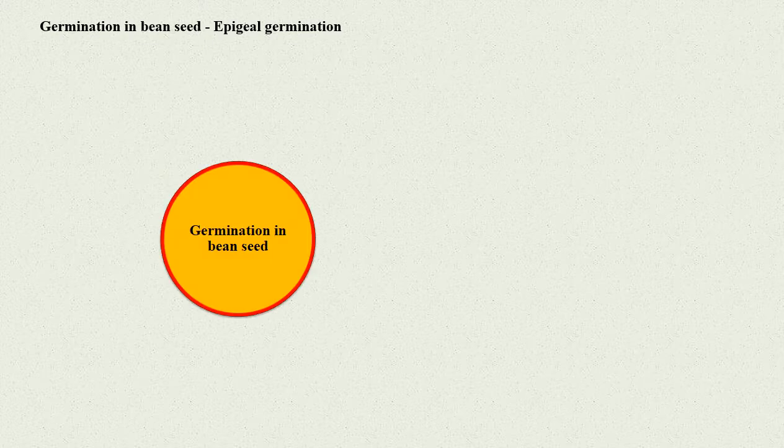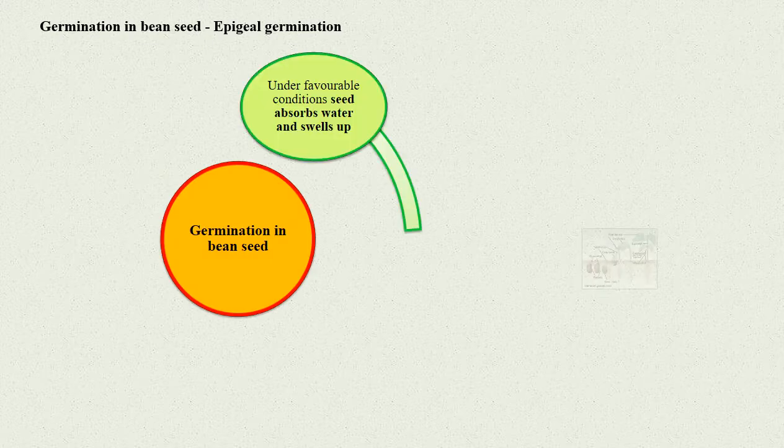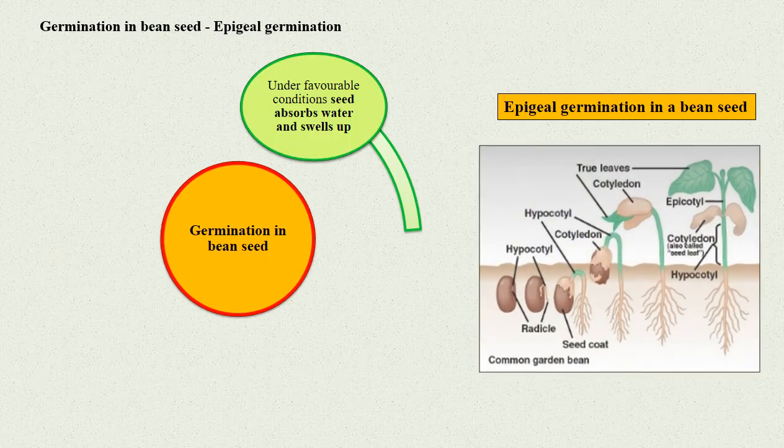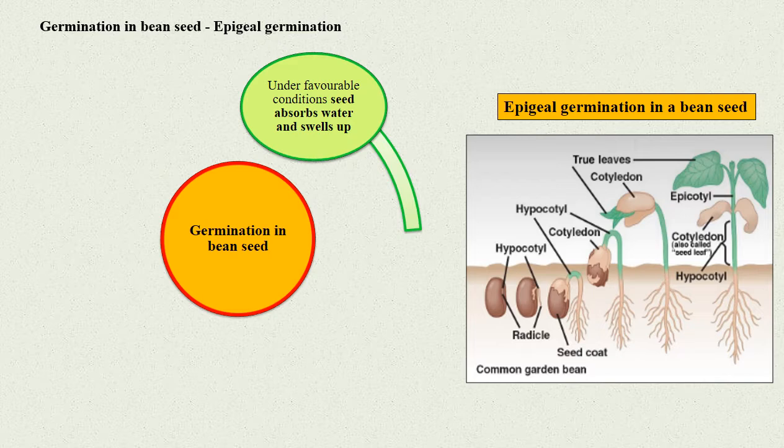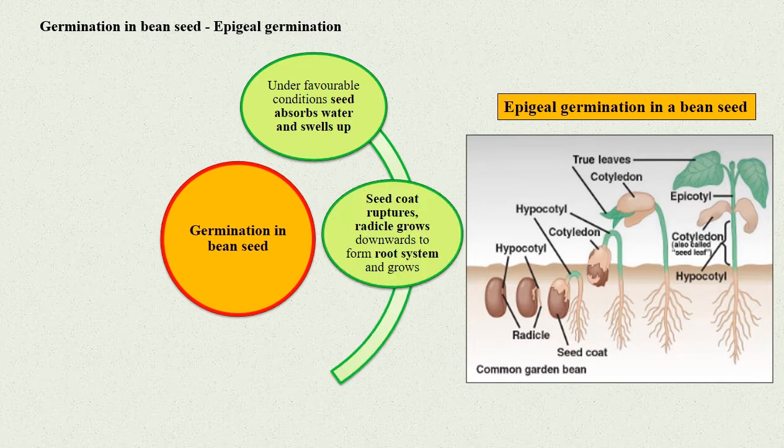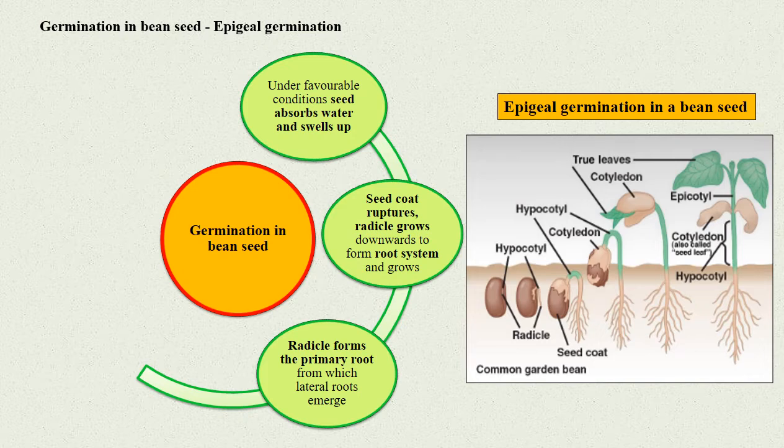Germination in bean seed - Epigeal germination: Under favorable conditions, the seed absorbs water and swells up. The seed coat ruptures and the radicle grows downwards to form the root system and grows further there. The radicle forms the primary root from which lateral roots emerge.